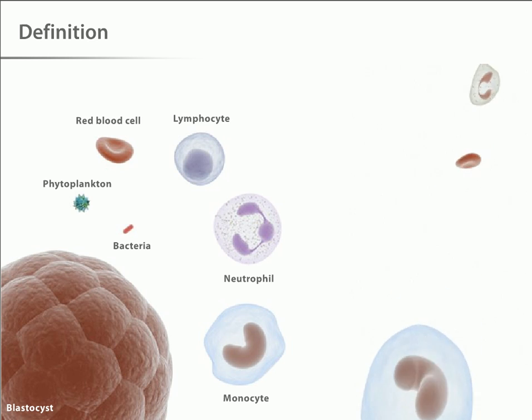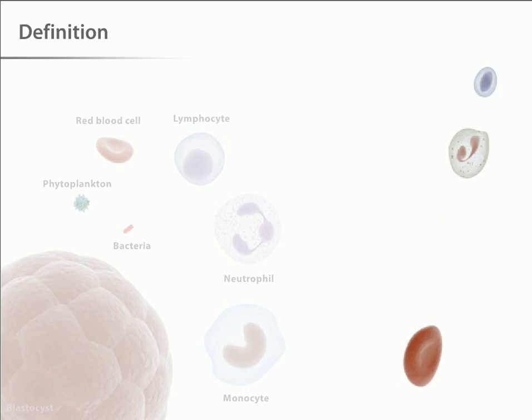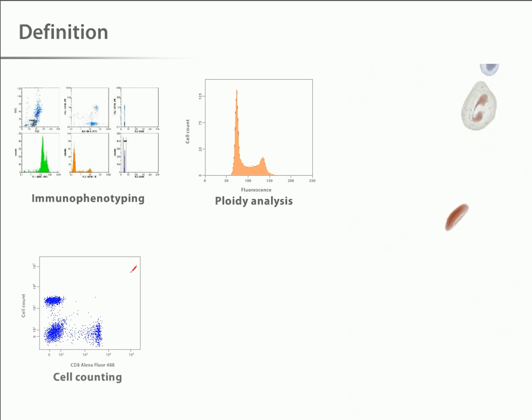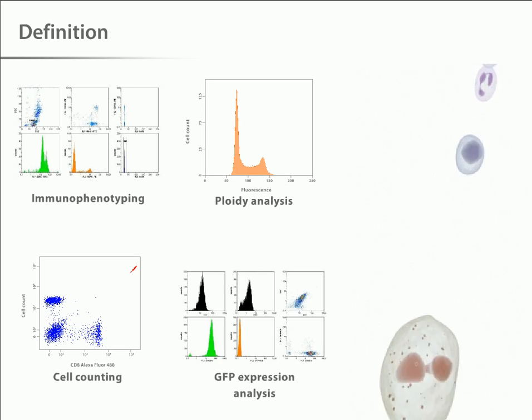Flow cytometry is a powerful technique for the analysis of multiple parameters of individual cells within heterogeneous populations. Flow cytometers are used in a range of applications, from immunophenotyping to ploidy analysis to cell counting and GFP expression analysis.